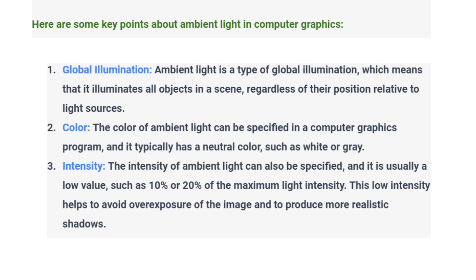Here are some key points about ambient light in computer graphics. Global Illumination: Ambient light is a type of global illumination, which means that it illuminates all objects in a scene, regardless of their position relative to light sources.